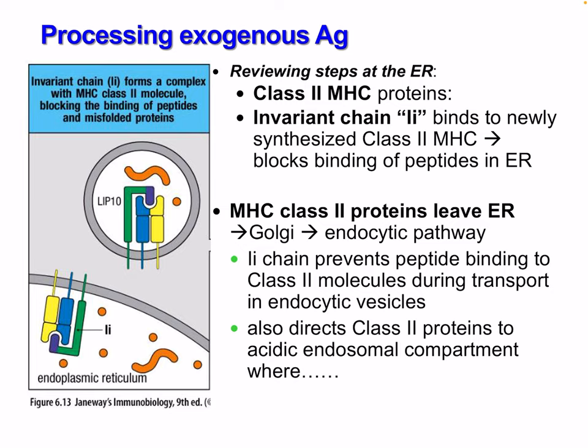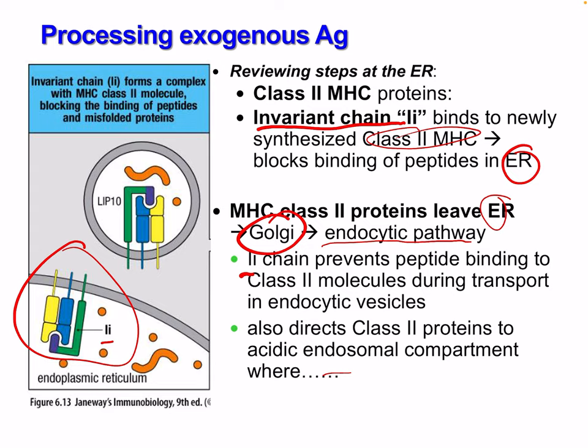Class 2 MHC proteins have an invariant chain which binds newly synthesized class 2 MHC. This blocks the binding of the peptide in the ER, and the MHC class 2 proteins leave the ER and go to the Golgi apparatus through the endocytotic pathway. This invariant chain prevents peptide binding to class 2 molecules during transport in endocytic vesicles and directs class 2 proteins to the acidic endosomal compartment. The invariant chain forms a complex with MHC class 2, blocking binding of peptides and misfolded proteins.